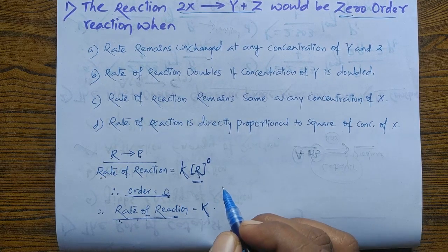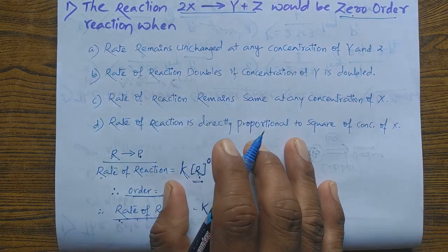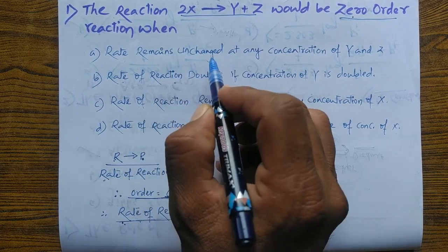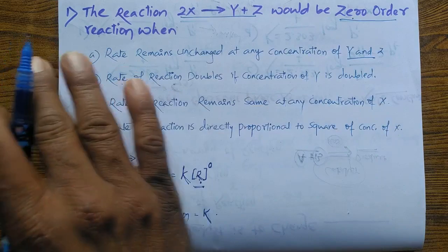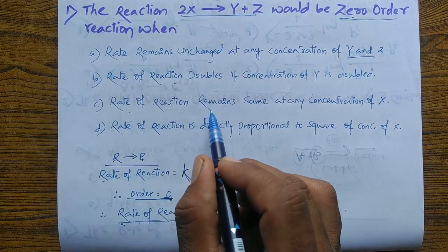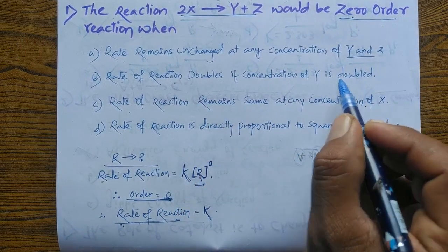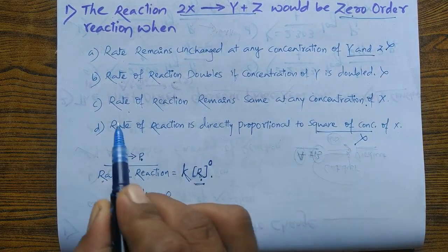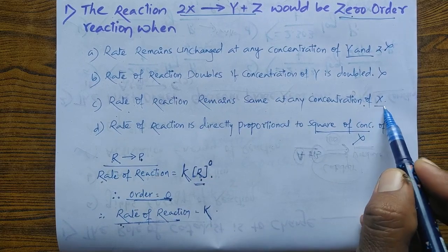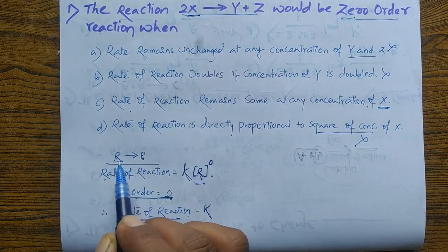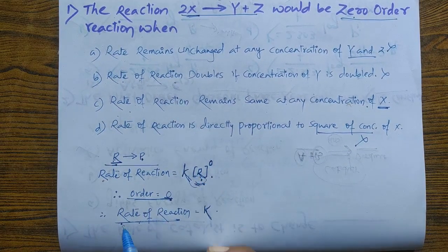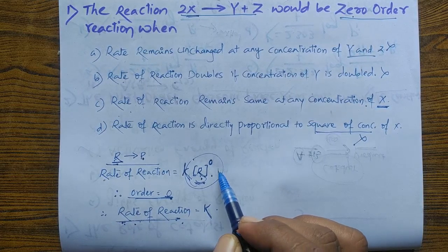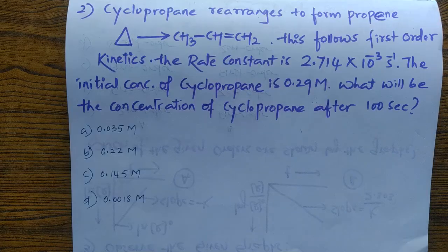So that will be the answer for this question. The rate of reaction remains unchanged at any concentration of Y and Z, and the rate of reaction remains the same at any concentration of X. Since the rate does not depend on the change in concentration of reactants, the correct option will be C.